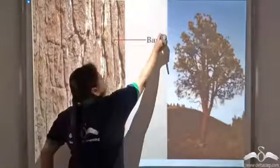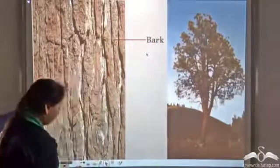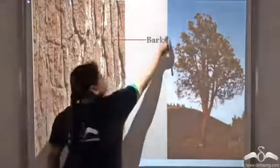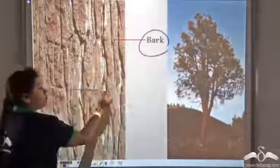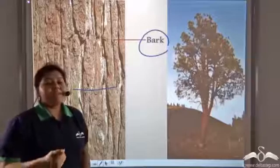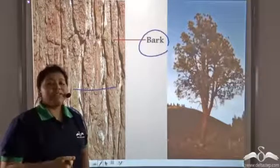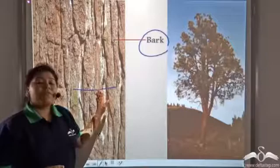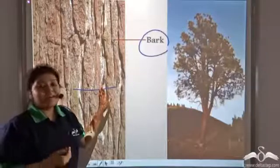So the bark is made up of sclerenchyma cells which get converted from the parenchyma cells of the epidermal tissue that is found in the young sapling.